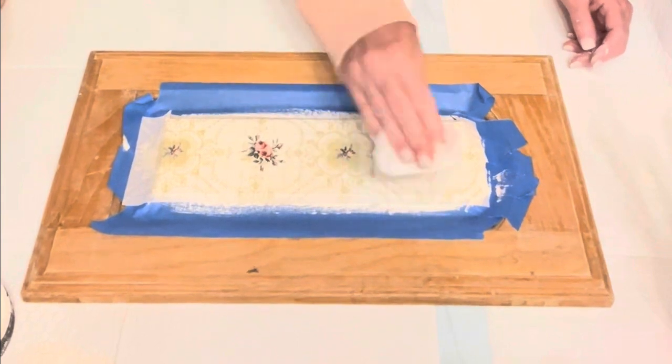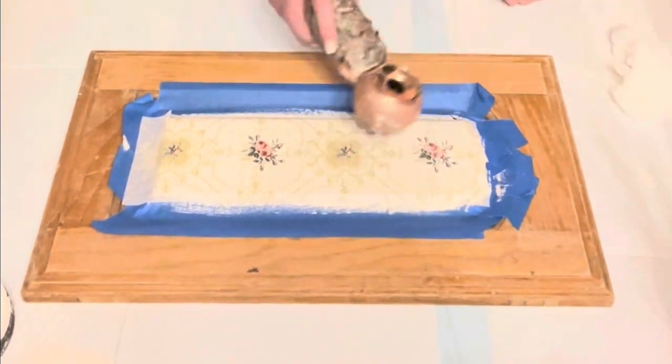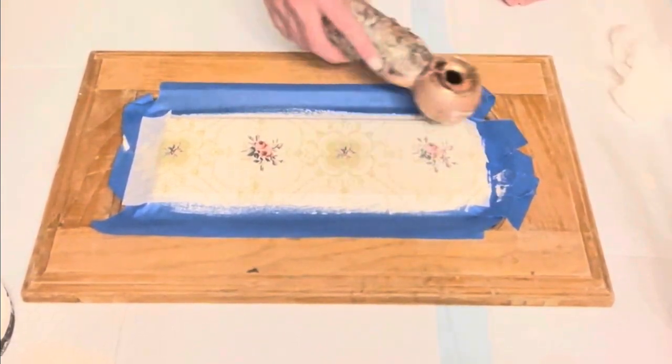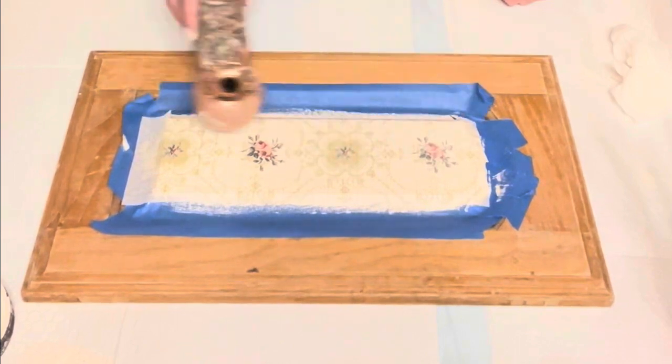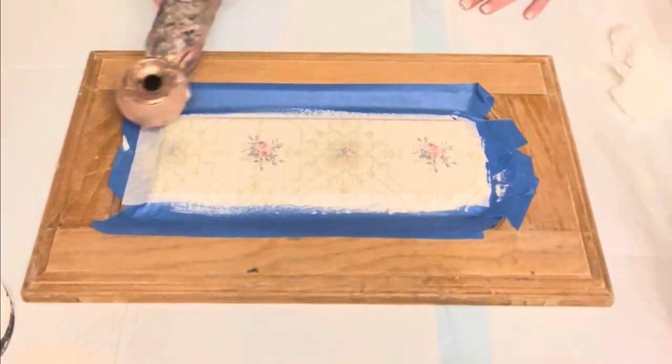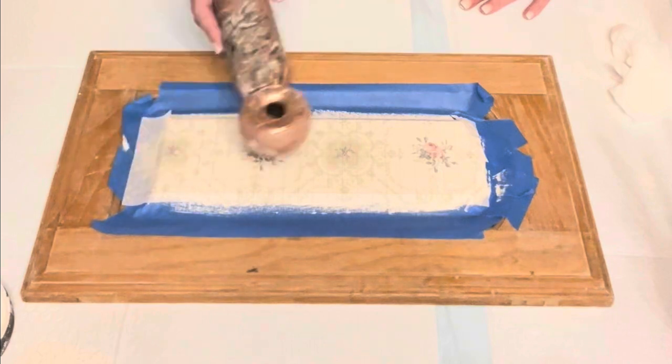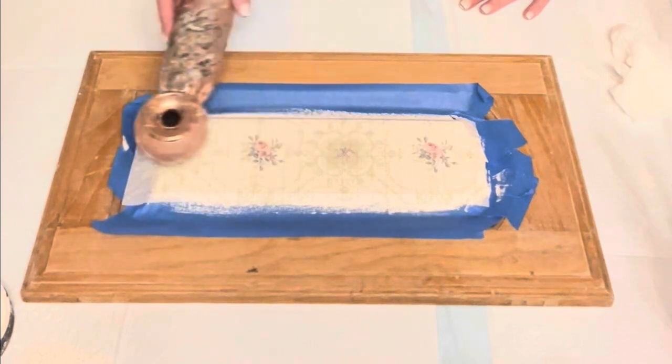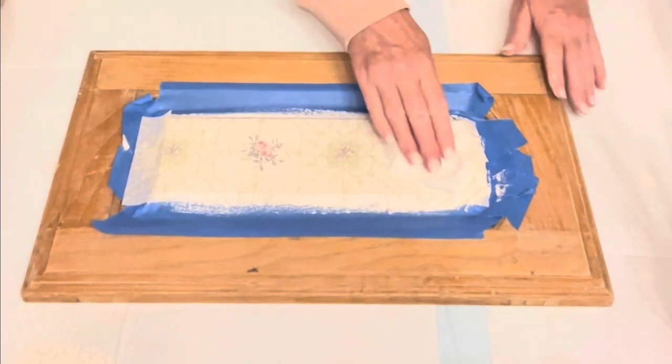Now once that's completely damp, you want to take your blow dryer once again. You need to make sure that not only the paint inlay is dry, but all of the paint underneath on your surface needs to be dry as well. So you dry and you dry and you dry to make sure.